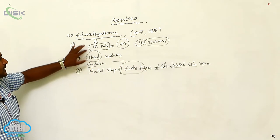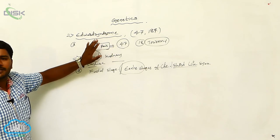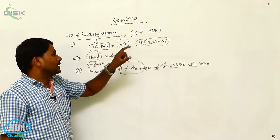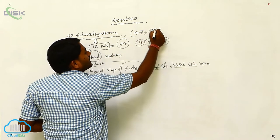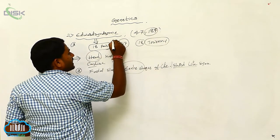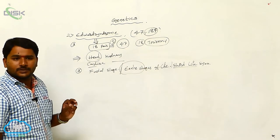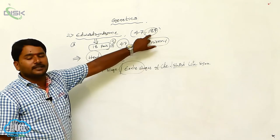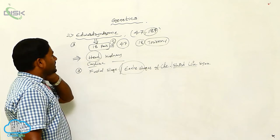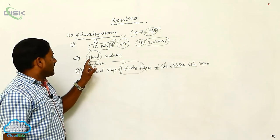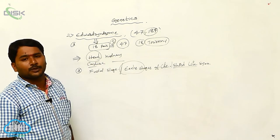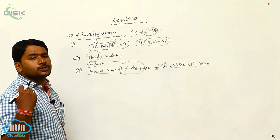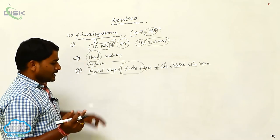Edward syndrome is characterized by the presence of an extra copy of the 18th chromosome — that extra copy is called trisomy, meaning three chromosomes of the 18th pair are present. People with Edward syndrome have heart and kidney problems. They usually die during the fetal stage, or if they survive, they die after a short lifespan. This is Edward syndrome.